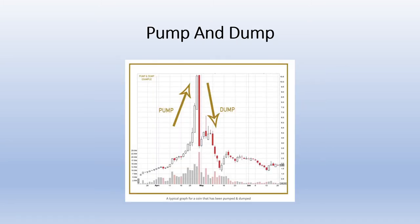The next one is pump and dump. This is when a coin gets a large amount of attention and sees an enormous price increase, which results in lots of coin holders selling and the price dropping back down. This can often be a scheme due to price manipulation, resulting in a gigantic peak followed by a gigantic plummet immediately after.